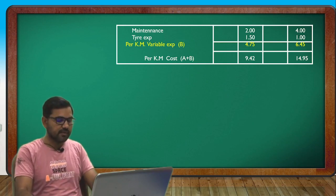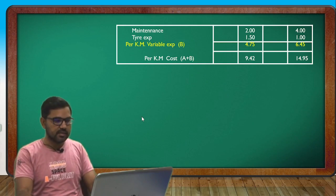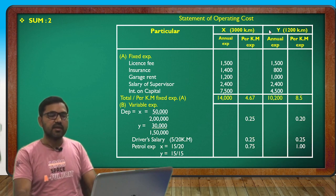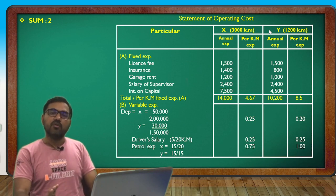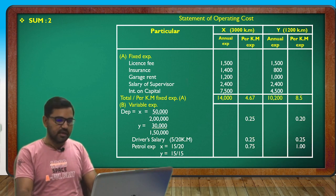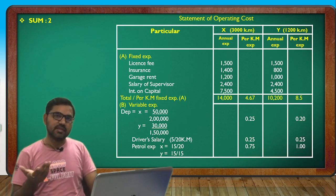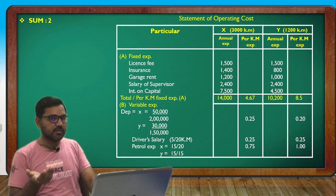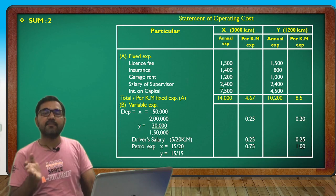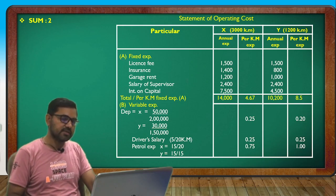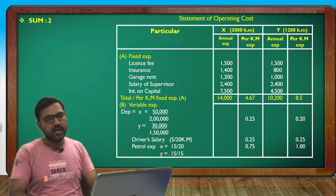So these were the key points discussed in this question. We found the per kilometer cost for both vehicles X and Y. Friends, this lecture is now complete. We will do question number 2 in the next lecture. Thank you and have a good day.